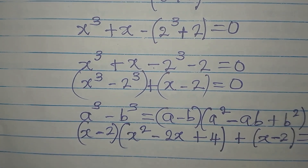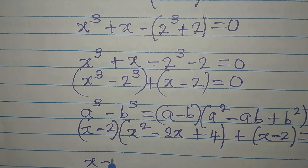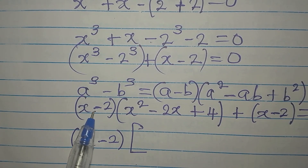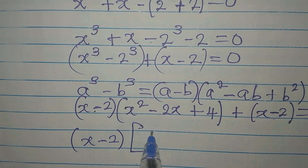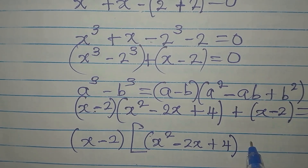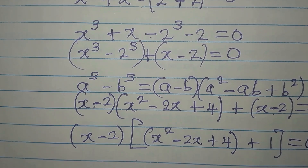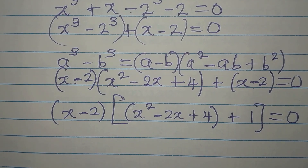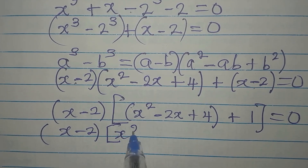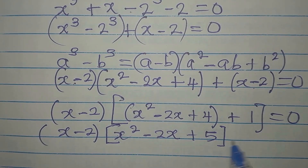So we now have (X - 2)(X² - 2X + 4) + (X - 2) = 0. We factor out (X - 2) as the common factor. Dividing (X - 2) by (X - 2) gives 1, so inside the brackets we get X² - 2X + 4 + 1 = X² - 2X + 5. This gives us (X - 2)(X² - 2X + 5) = 0.